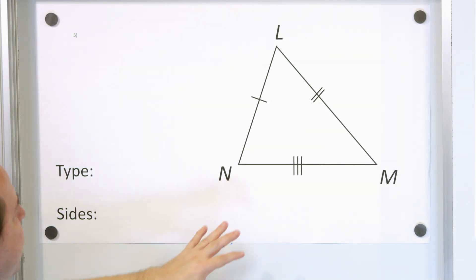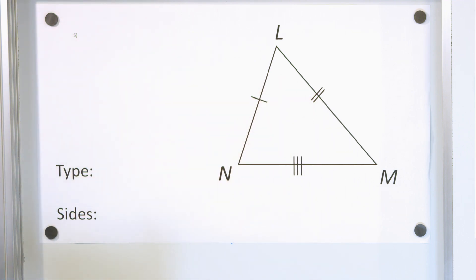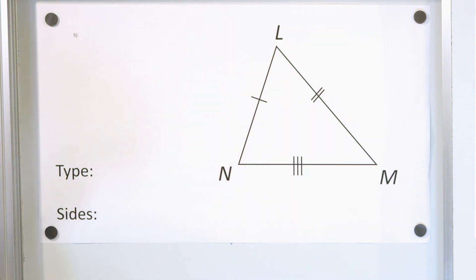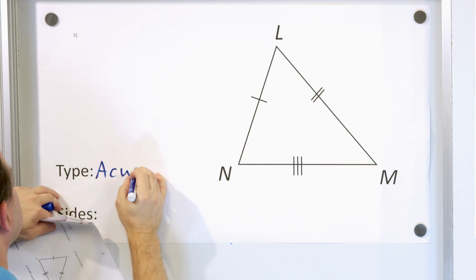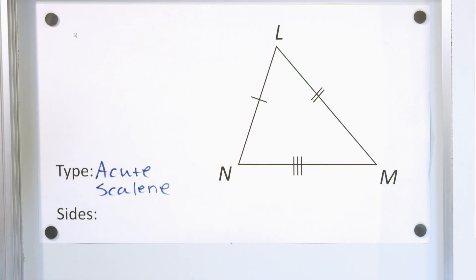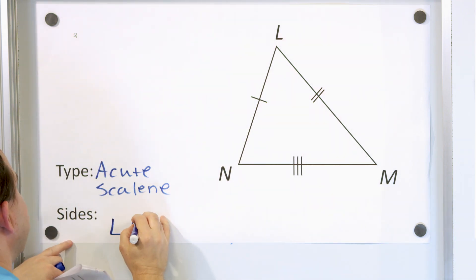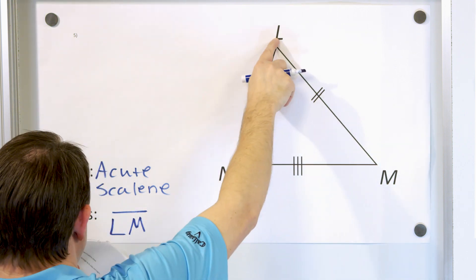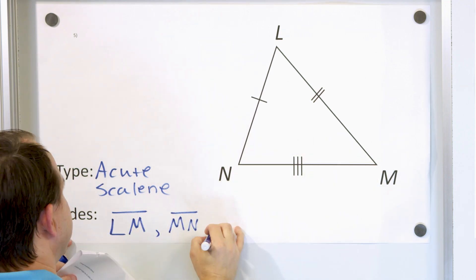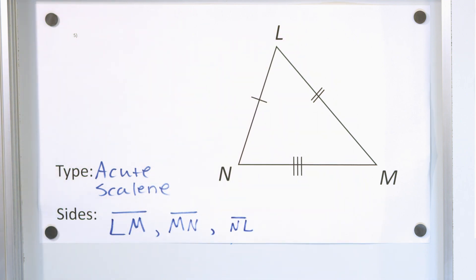Problem number five: the three sides all have different lengths, so it's a scalene triangle. All three angles are also acute. Together, we call it an acute scalene triangle. The question asks us to name all the sides: we have side LM, side MN, and side NL — just getting practice with naming line segments.